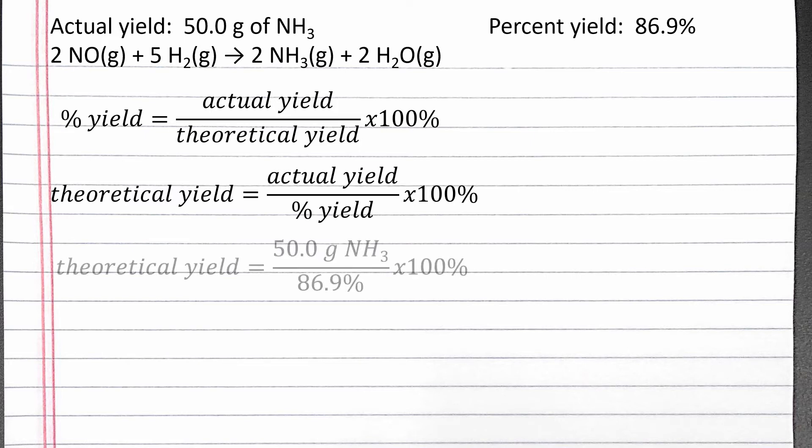We're given the actual yield in the problem: we want to actually produce 50 grams of ammonia. We're also given the percent yield in the problem. Our reaction has an 86.9% yield. Completing the calculation, we get 57.54 grams of ammonia.